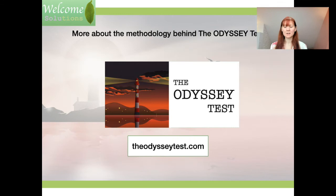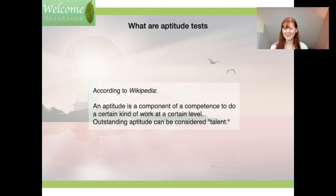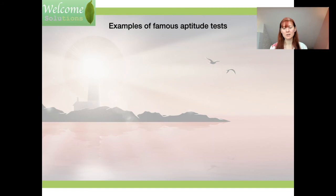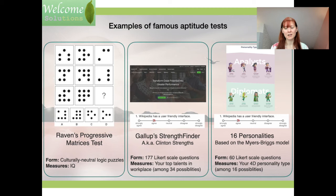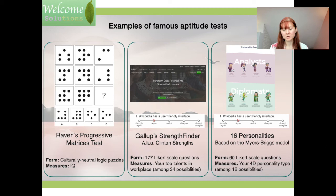Now, a few words about the methodology behind the test. According to Wikipedia, an aptitude is a component of a competence to do a certain kind of work at a certain level — an outstanding aptitude can be considered talent. Examples of famous aptitude tests include Raven's Progressive Matrices, Gallup StrengthsFinder, and 16 Personalities — all of which take quantitative measures of our cognitive abilities or personality traits. These were done in different ways: Raven's is a culturally neutral logic puzzle, Gallup StrengthsFinder uses 177 Likert-scale questions, and 16 Personalities uses 60 Likert-scale questions.